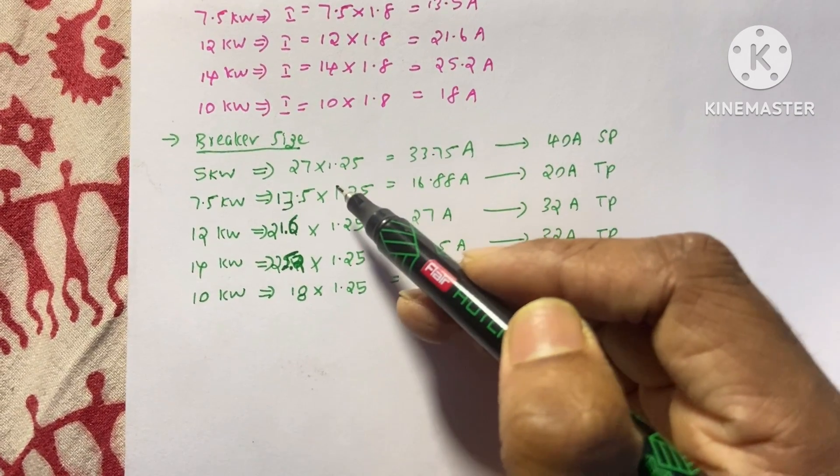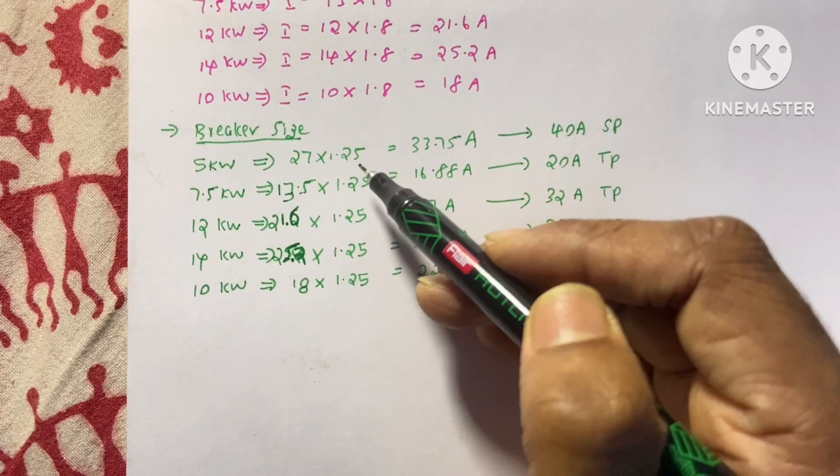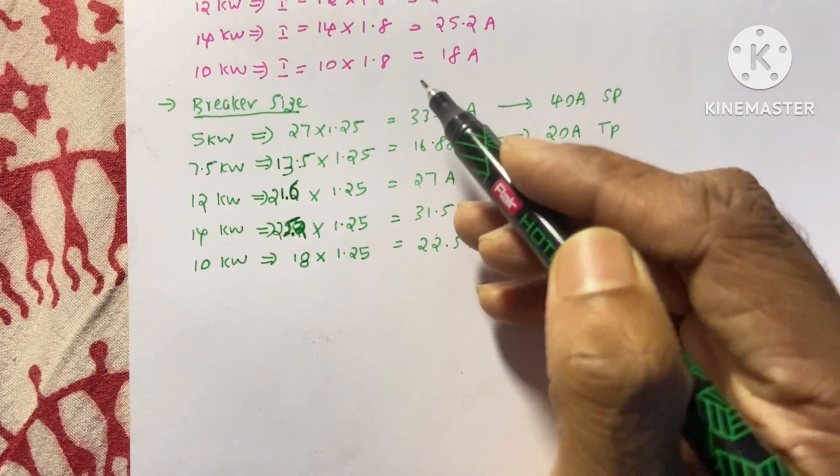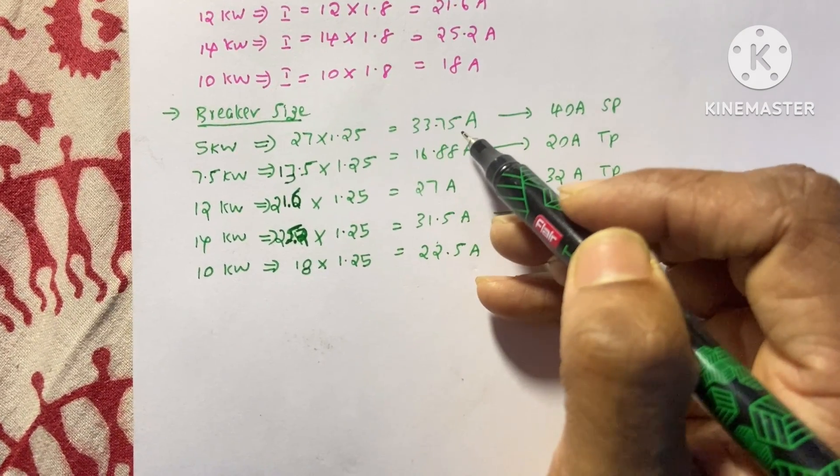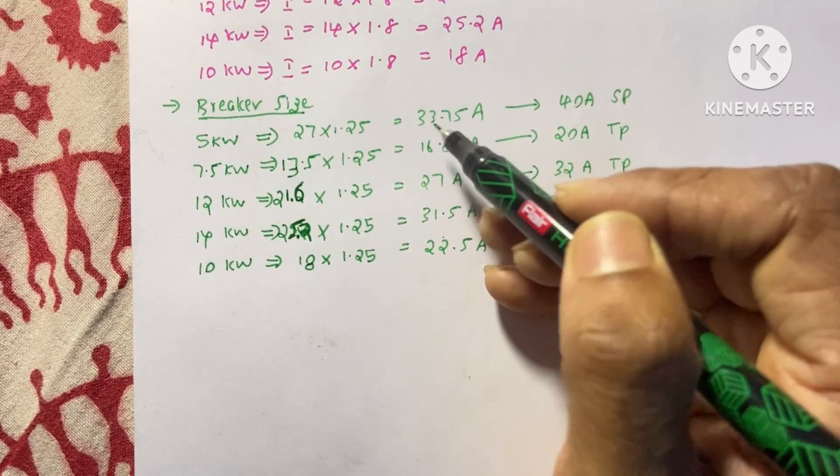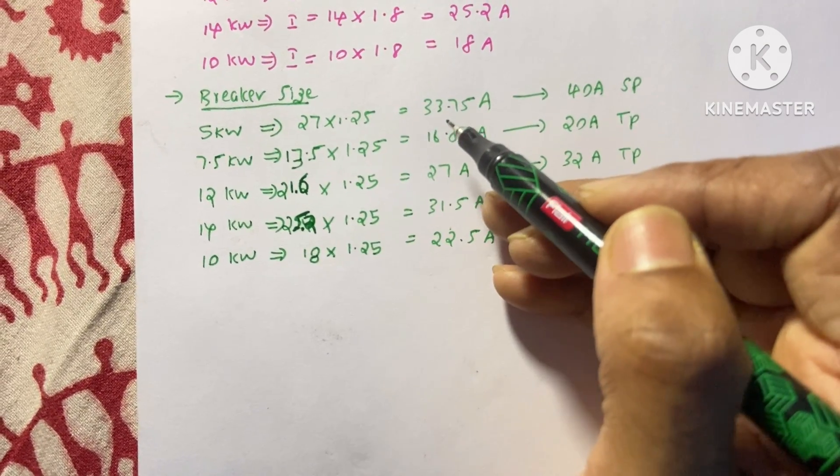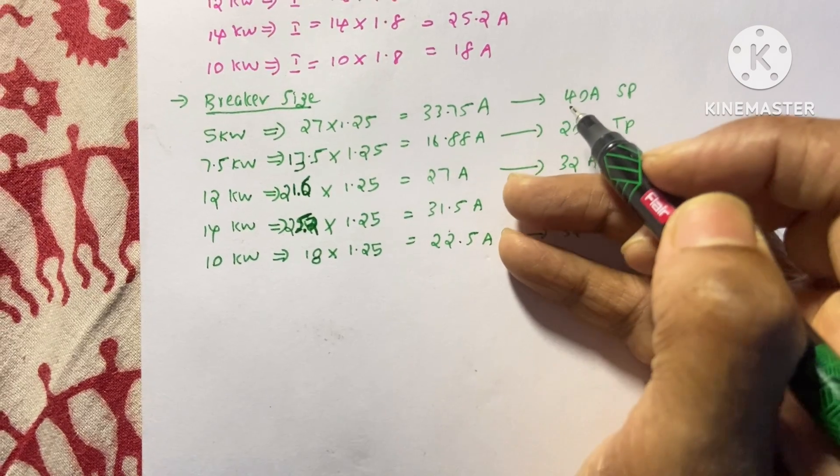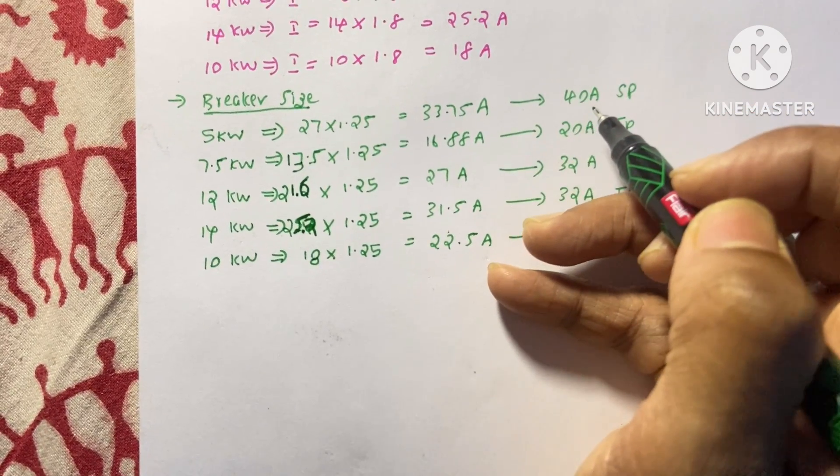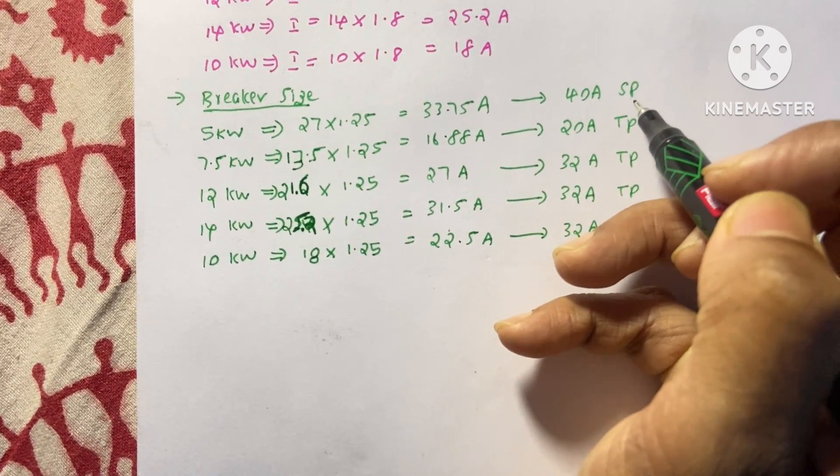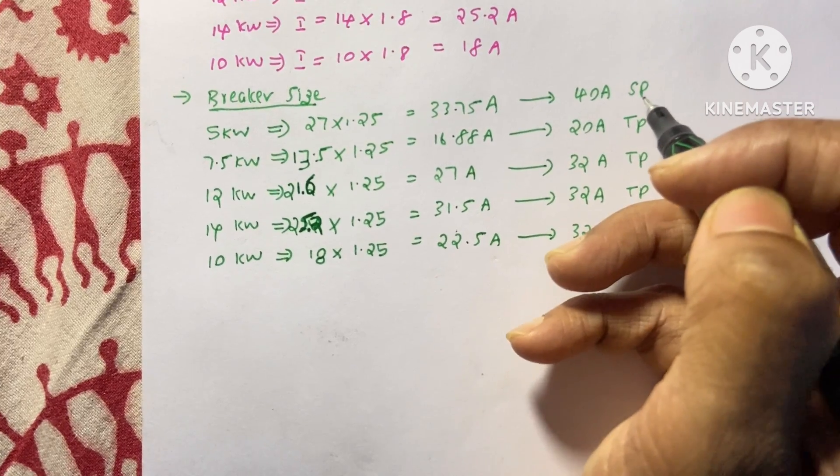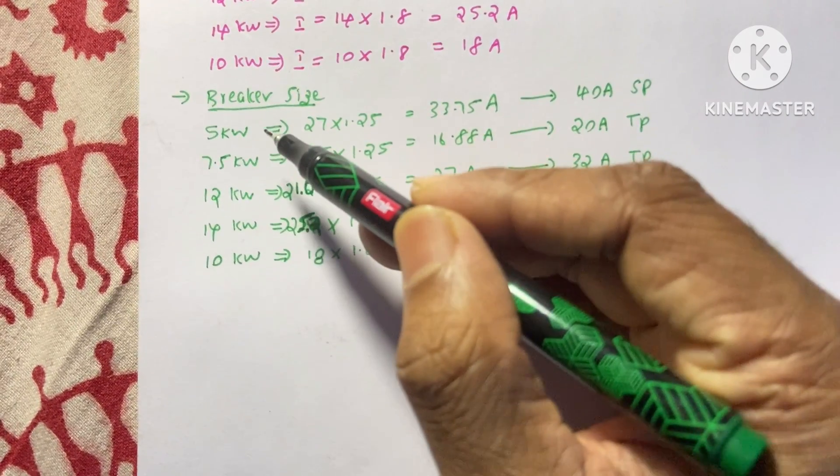This 27 into 1.25. This 1.25 is the factor to find the breaker size. So we will get 33.75 ampere. It is the breaker size. But this size is not available. So we need to choose the next higher size. That means 40 ampere single pole breaker. Single pole because it is the single phase motor.